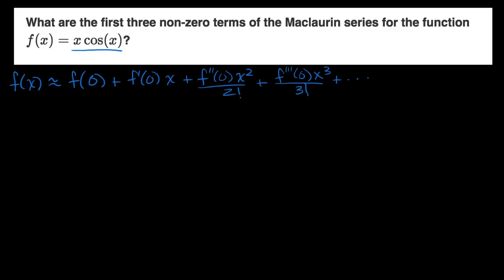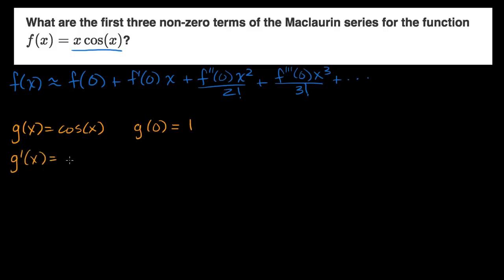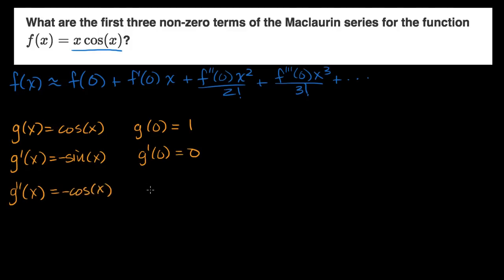Let's think about the various derivatives of cosine of x. If g of x equals cosine of x, then g of zero equals one. The first derivative is negative sine of x, so the first derivative evaluated at zero is zero — negative sine of zero is zero. The second derivative: the derivative of negative sine is negative cosine of x. So the second derivative evaluated at zero is equal to negative one.